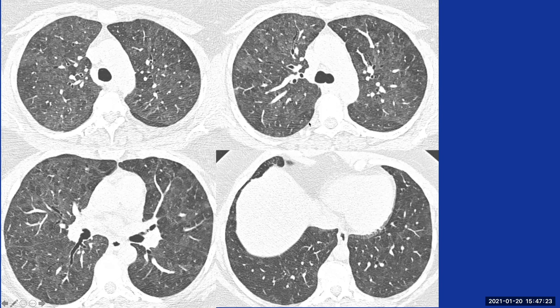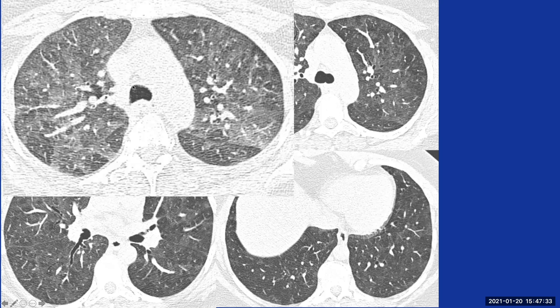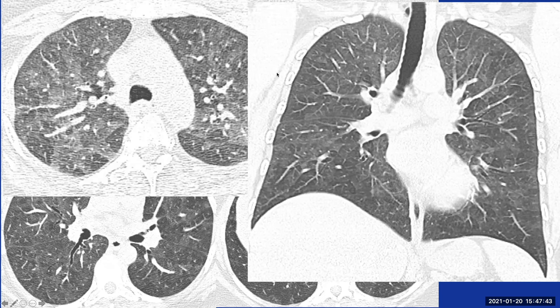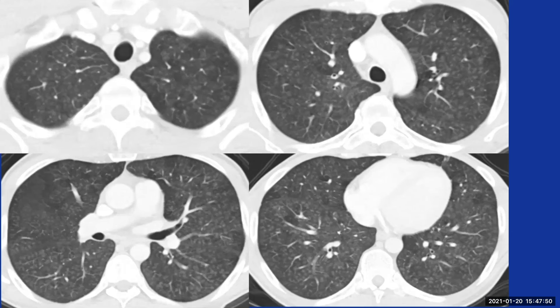Here we see diffuse ground glass abnormality with superimposed mosaic attenuation. On expiration, these areas of mosaic attenuation represent air trapping — they stay equally black on inspiration as on expiration. On the coronal plane, we see this is indeed a diffuse process in both the superior-inferior direction and the axial plane. This is typical non-fibrotic hypersensitivity pneumonitis.